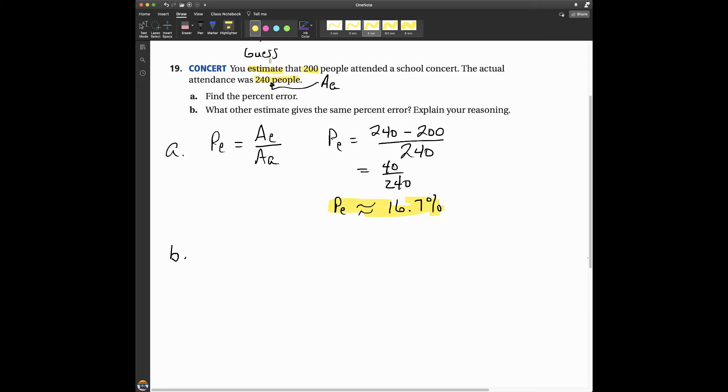Alright, for part B, it says, what other estimate? So, what other guess gives the same percent error? Alright, so I want to draw a little number line to talk about this.